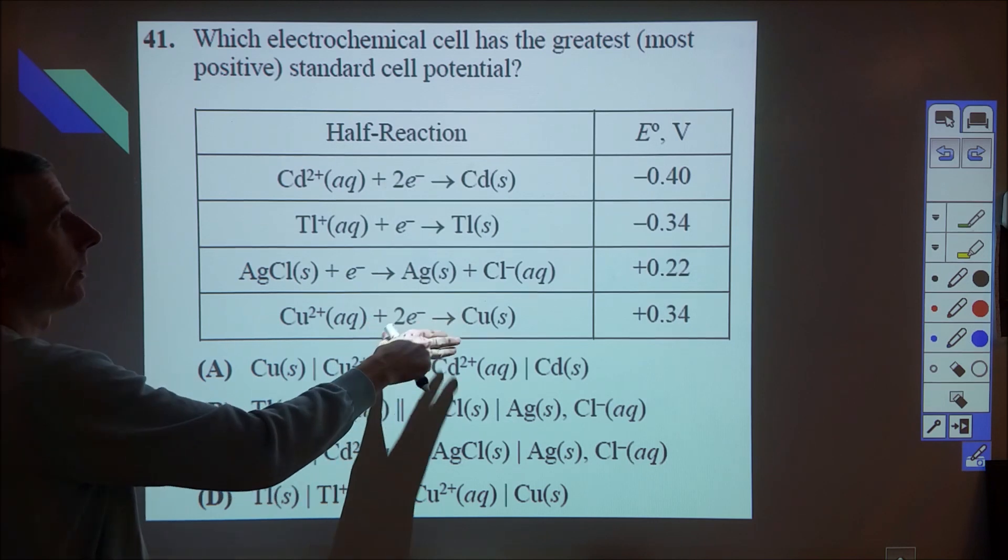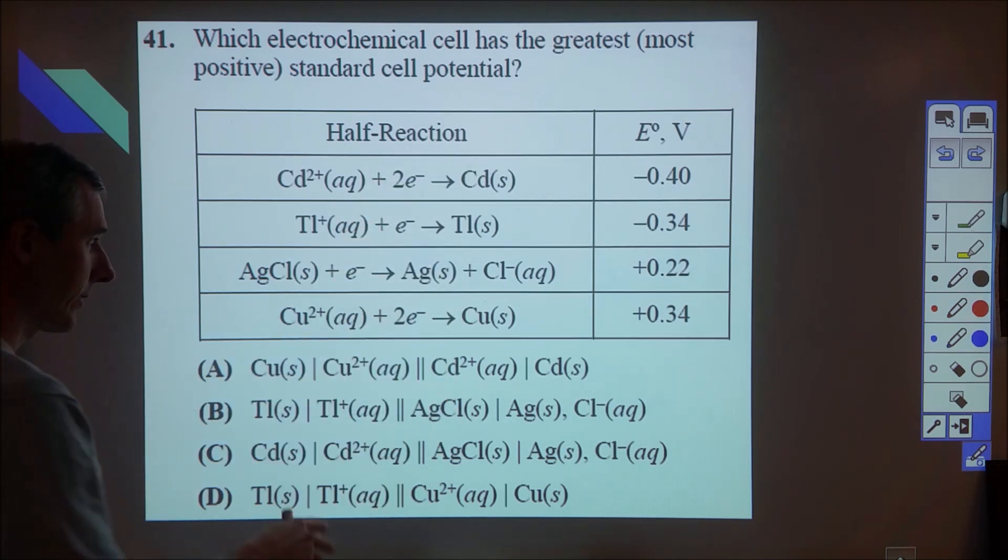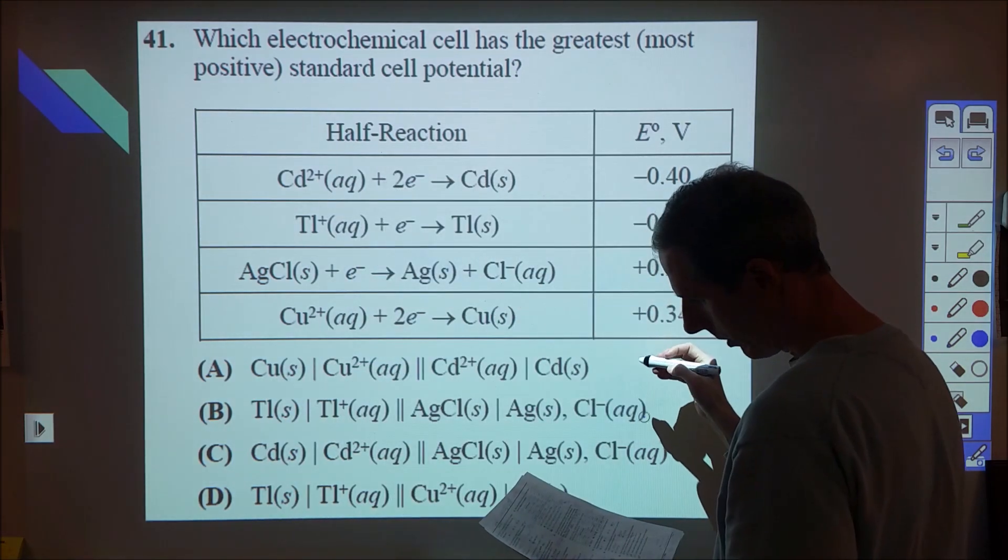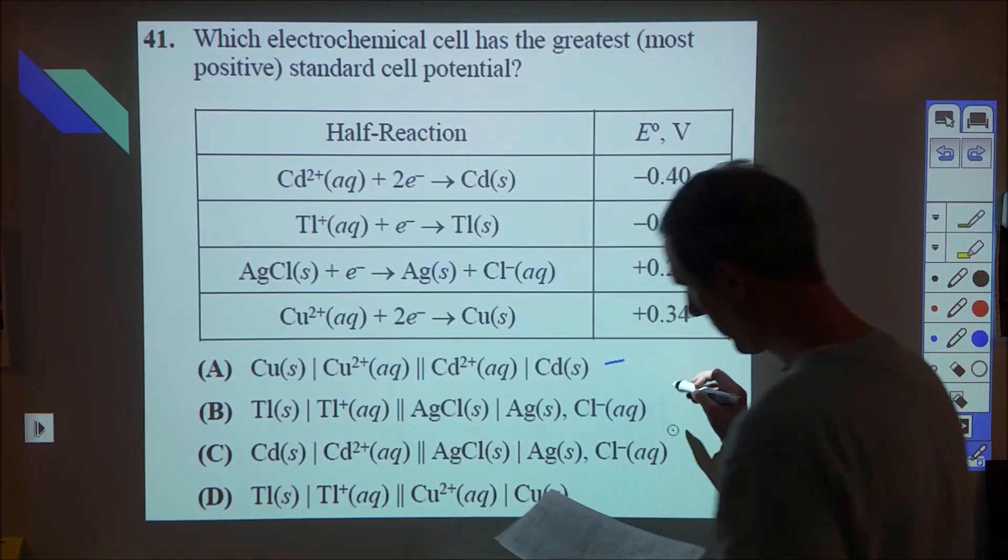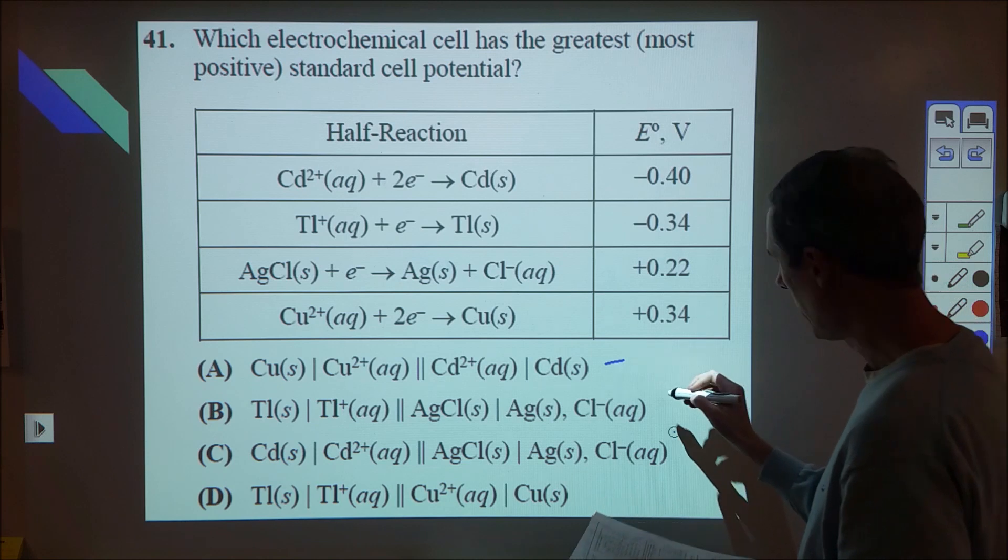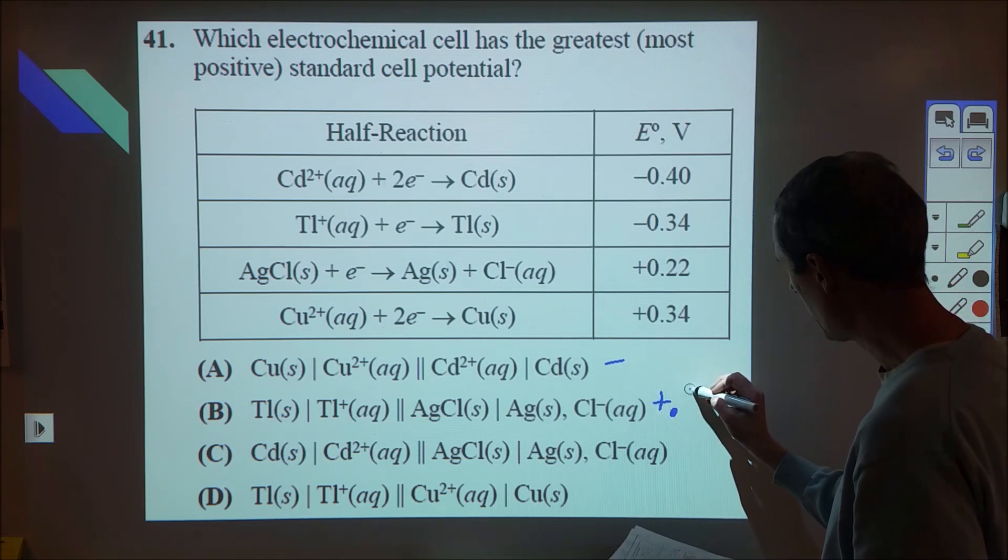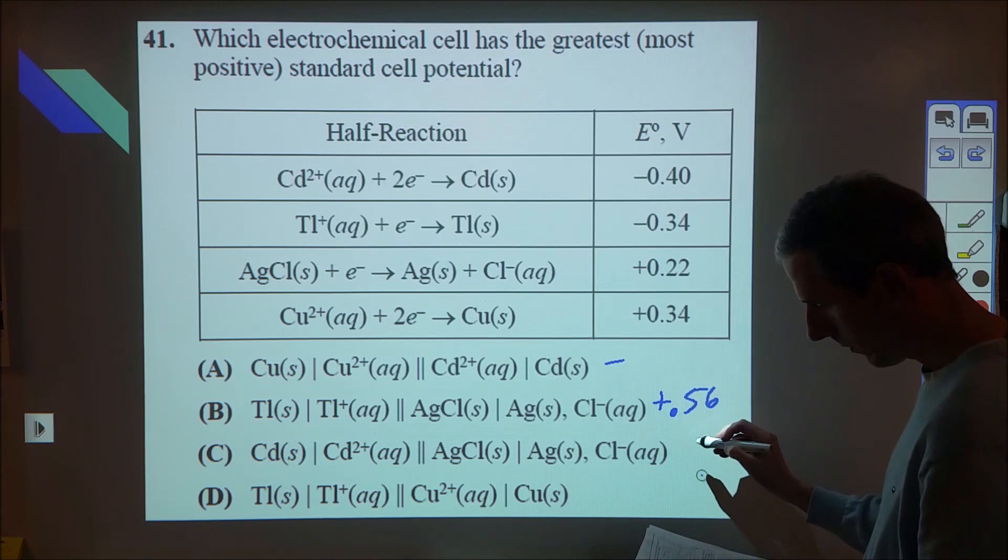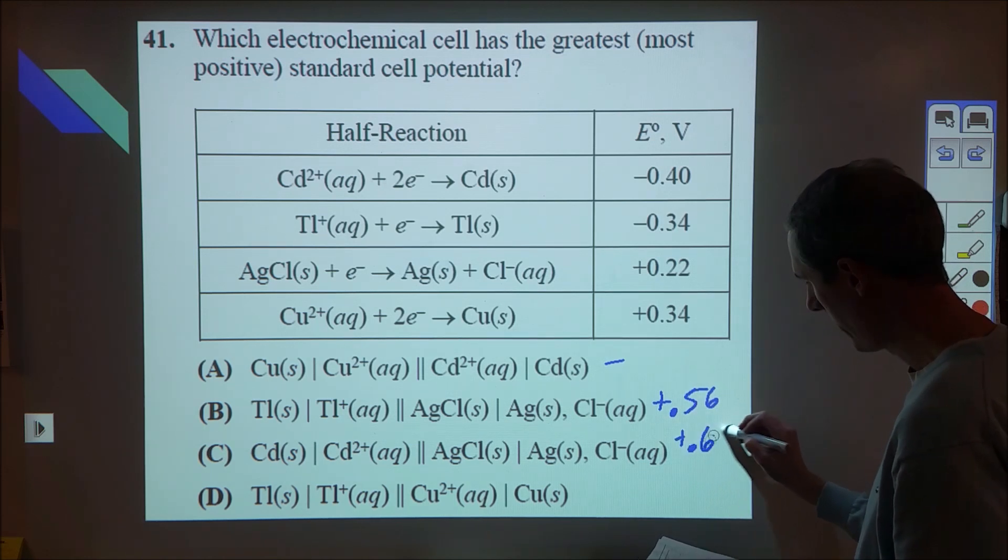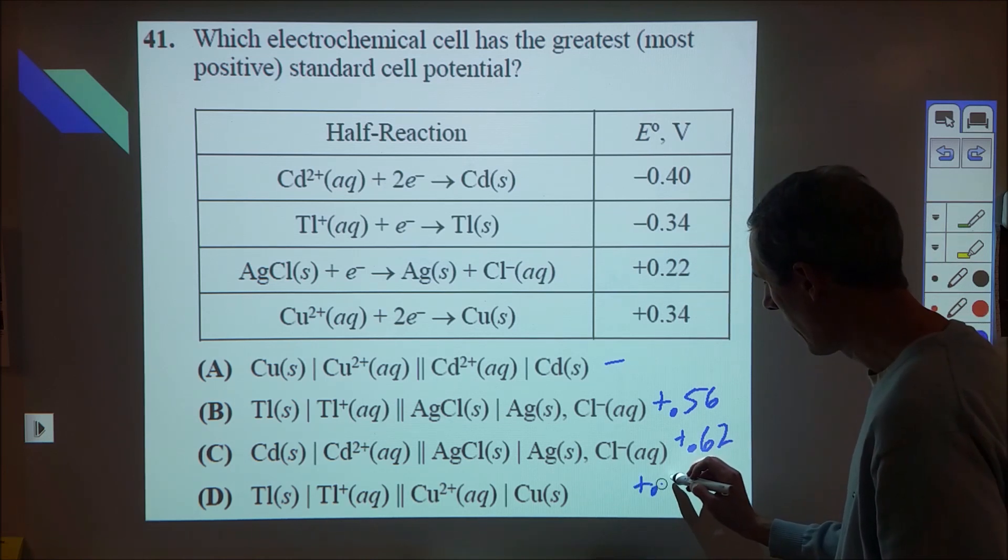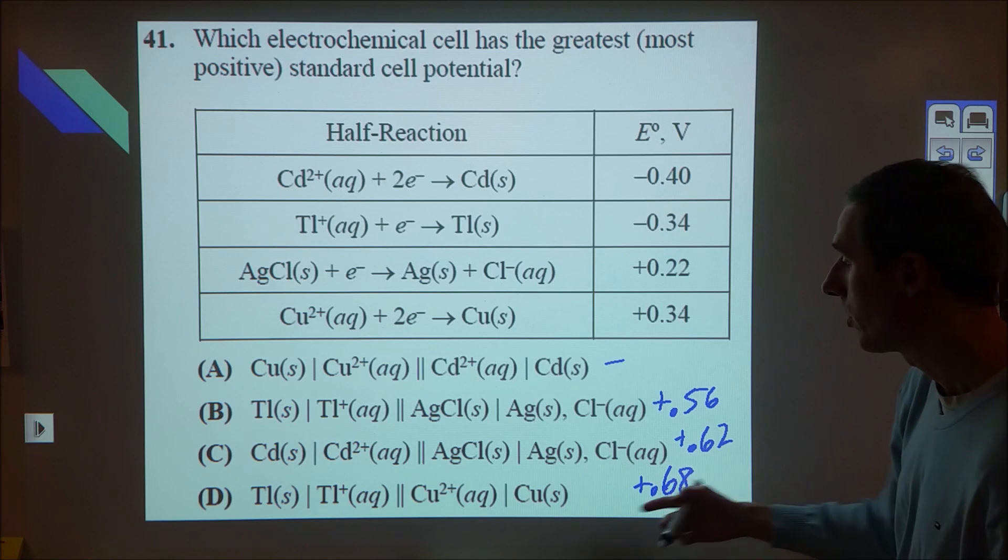Ideally we would have the copper being reduced and the cyanide being oxidized, but none of those are options. This first one here ends up with a voltage that is negative, so we don't want that. The next three actually all have pretty decently positive voltages. We have plus 0.56, for this we have plus 0.62, and D here we have plus 0.68.